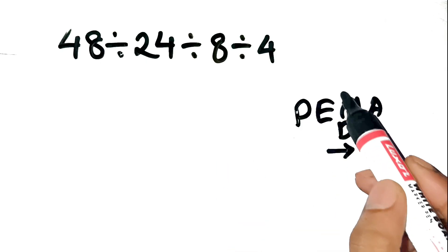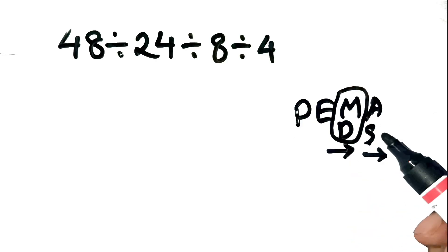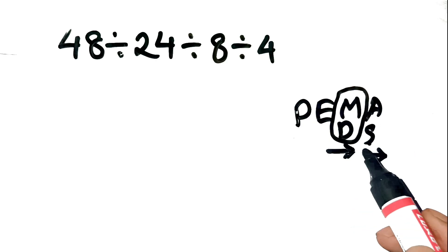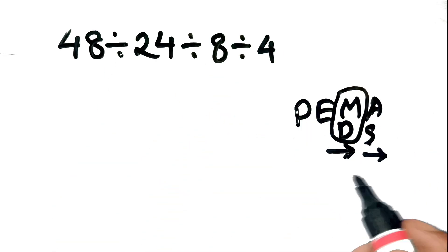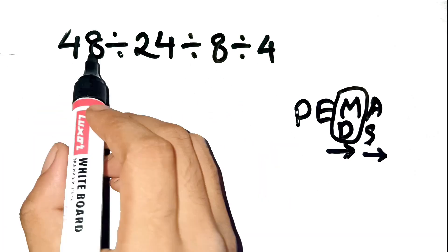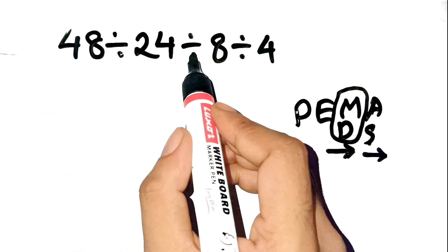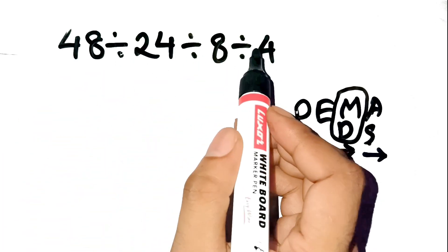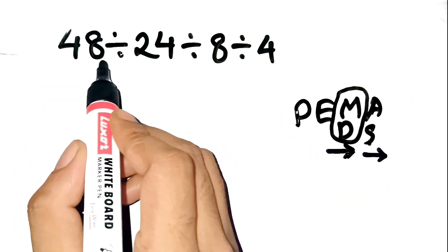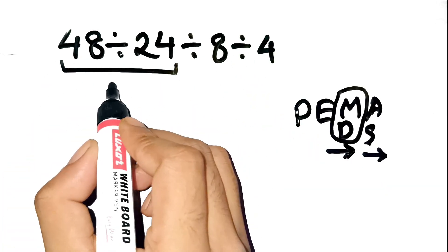Notice, division and multiplication have equal priority, and you always work left to right. That's the part most people forget. Let's solve it carefully. We have 48 divided by 24 divided by 8 divided by 4. Step 1: Start from the left. 48 divided by 24 equals 2.